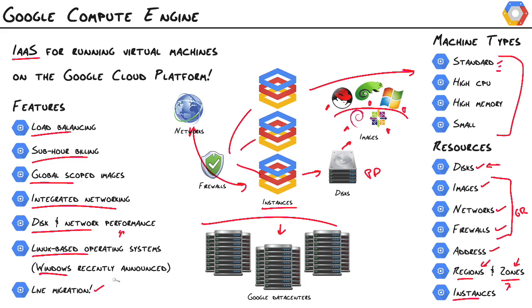Another brand new feature recently announced is live migration, and this is a big differentiator between Compute Engine and the competition. In the competition, when your virtual machine needs to get taken down for maintenance, you'll get an email a few weeks or a few days before that happens. In Compute Engine, it's all transparent — Google will actually migrate your instance to another instance so they can take down the original for hardware or software maintenance. Your instance could go down 10 times in a day and you'll never notice a difference. It all equates to zero downtime, which is a pretty big deal in the IT industry, and the fact that it's transparent is just icing on the cake.